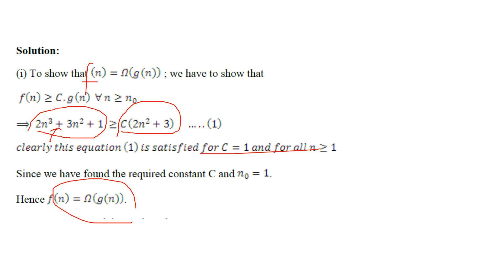What we are really interested in is designing algorithms, counting statements, and determining the minimum, maximum, or average number of steps — focusing on the dominant higher-order term. For example, the time complexity could be O(n²) for the upper bound or Ω(n) for the lower bound. The next set of lectures will focus on the divide and conquer design technique and how to calculate time complexity using that approach.